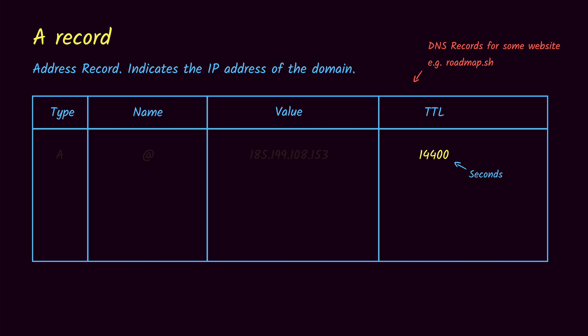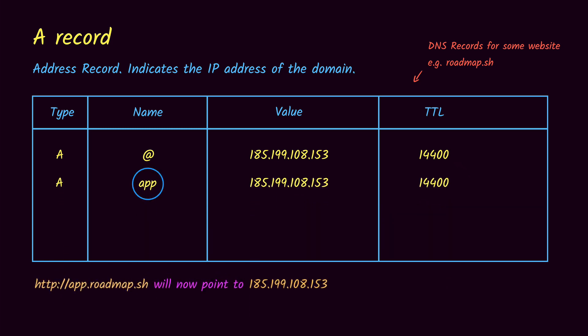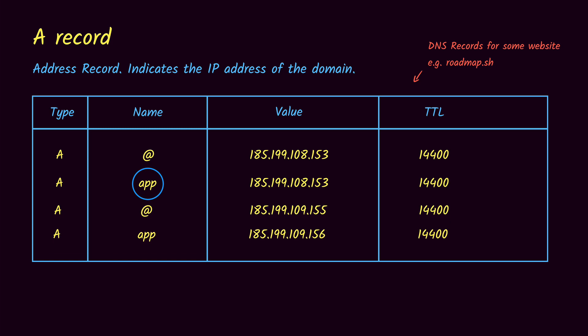We can have an A record for a subdomain also. So in this case app.roadmap.sh points to a different IP address. We can also have multiple A records for a domain or subdomain which are pointing to different servers.